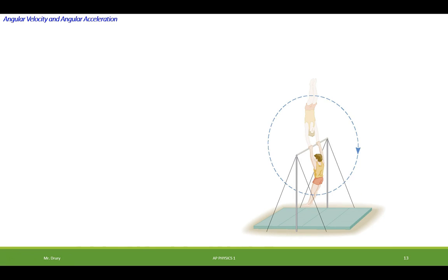Let's look at an example. We have a gymnast on a high bar that swings through two revolutions in a time of 1.9 seconds, and we need to find the average velocity of the gymnast.